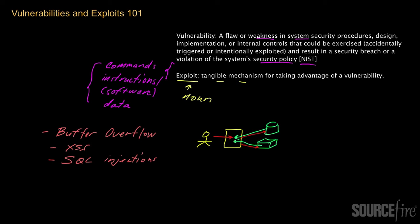For example, the attacker might succeed in divulging sensitive user data or displaying content on a web page that's controlled by the attacker. It's worth pointing out that a given software application might exhibit one or more of these vulnerabilities — it's not like one vulnerability is somehow sacrosanct. In fact, an application may have multiple vulnerabilities of a given type, such as multiple buffer overflow vulnerabilities within a single software application.